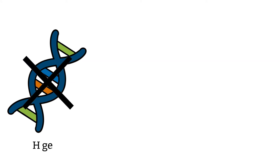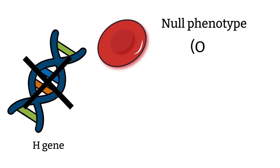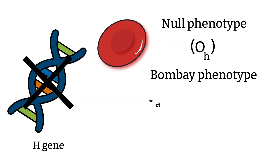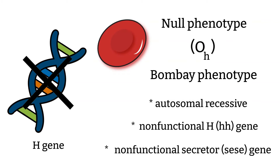The lack of expression of H antigen on RBC means there is no H antigen on the RBC. This creates a rare condition called null phenotype, which can be written as O-subscript-H, more commonly referred to as Bombay phenotype. A person with Bombay phenotype is rare. Since it is autosomal recessive genetically, a Bombay phenotype person is homozygous for non-functional both H and secretor genes. This leads to the unique characteristic of lacking A, B, and H antigen expression both on the RBCs and in secretions.